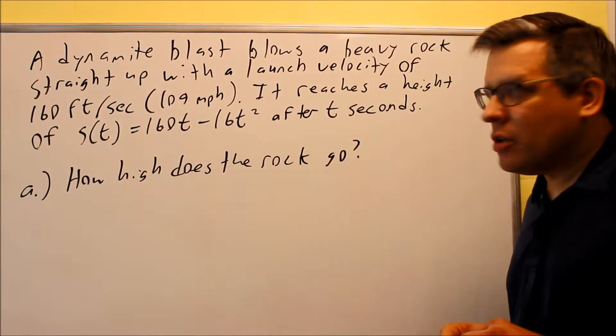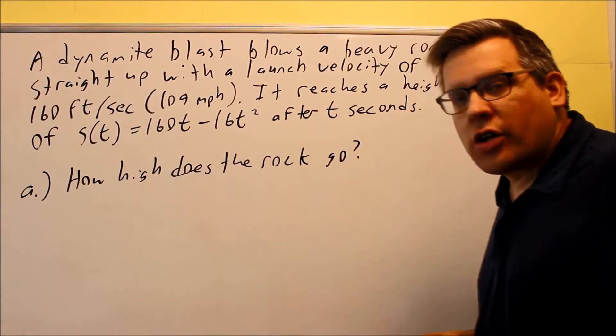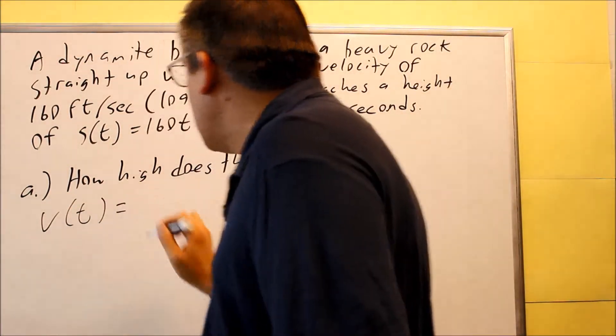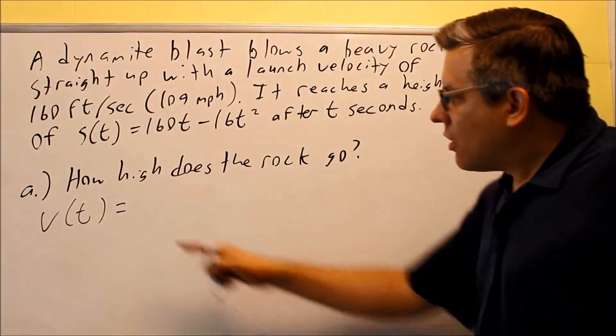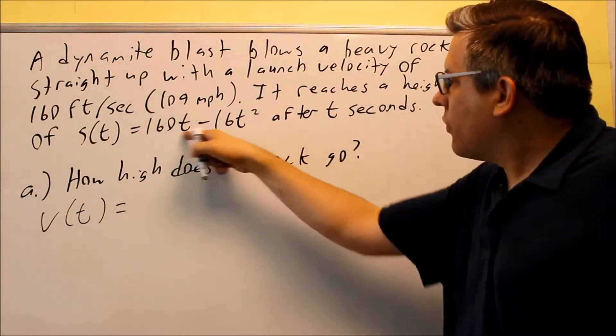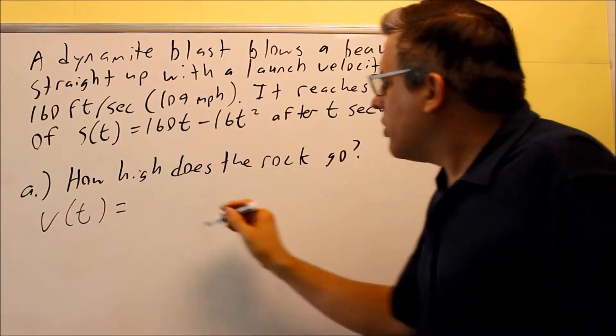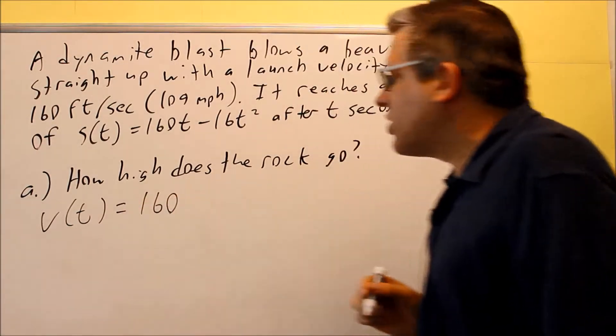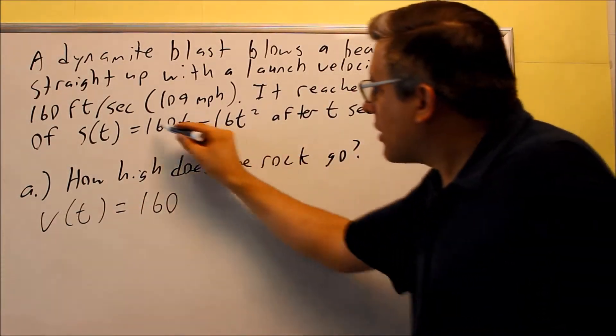We're going to take the derivative of this in order to get the velocity function. We'll do that first. The derivative of 160t is just going to be 160, we're just going to get the constant in front of the t there.